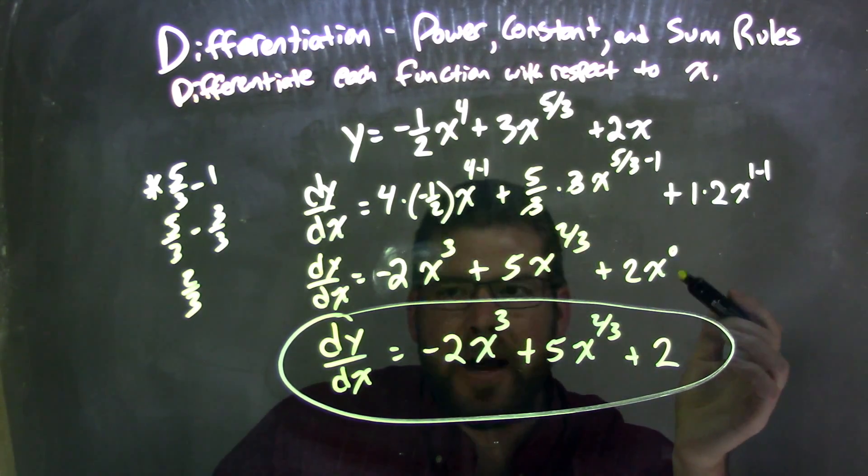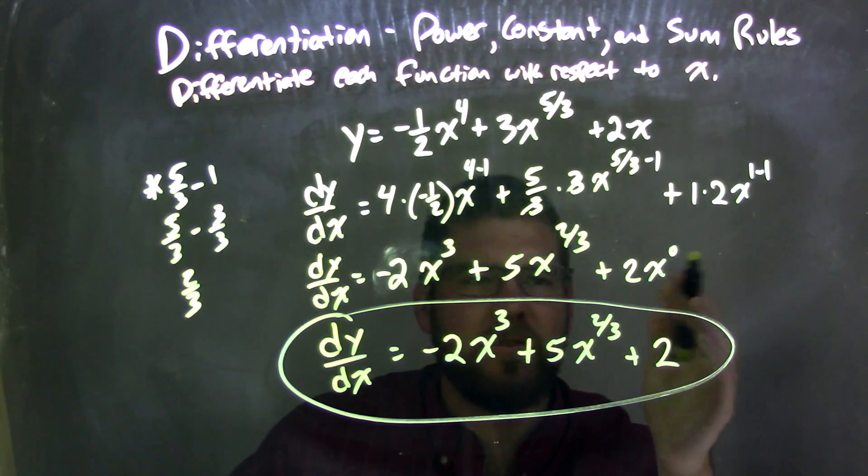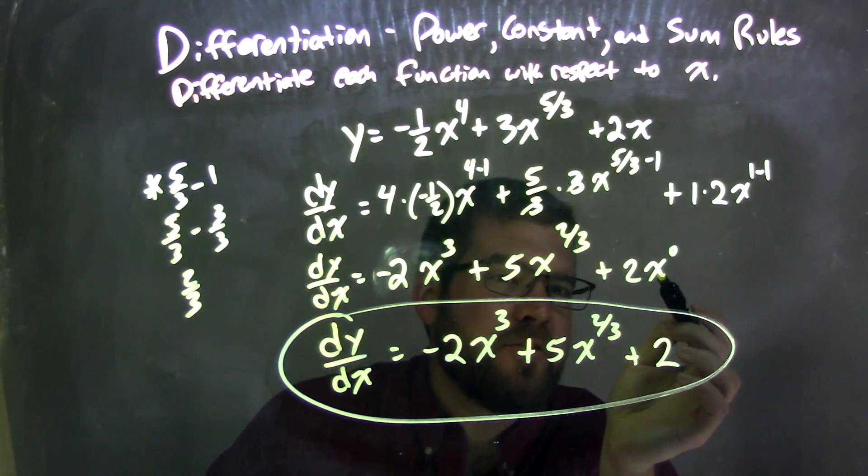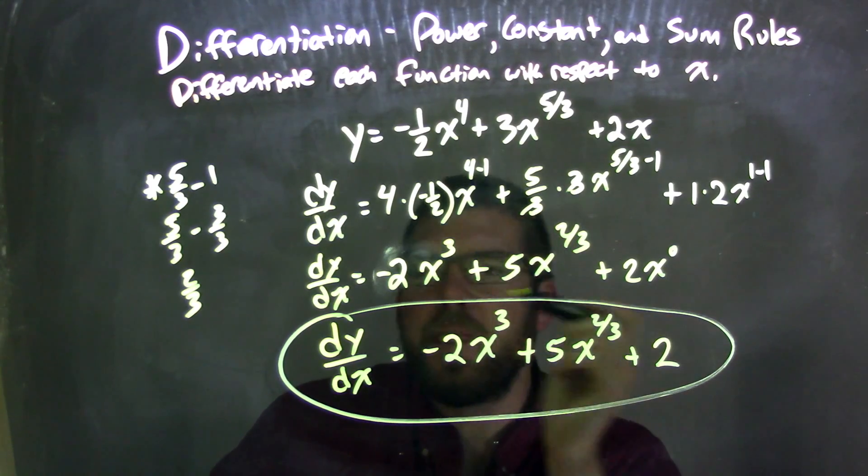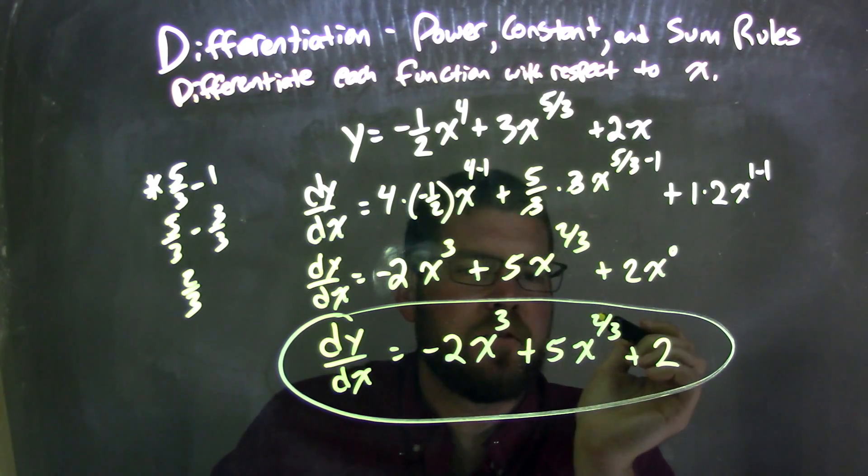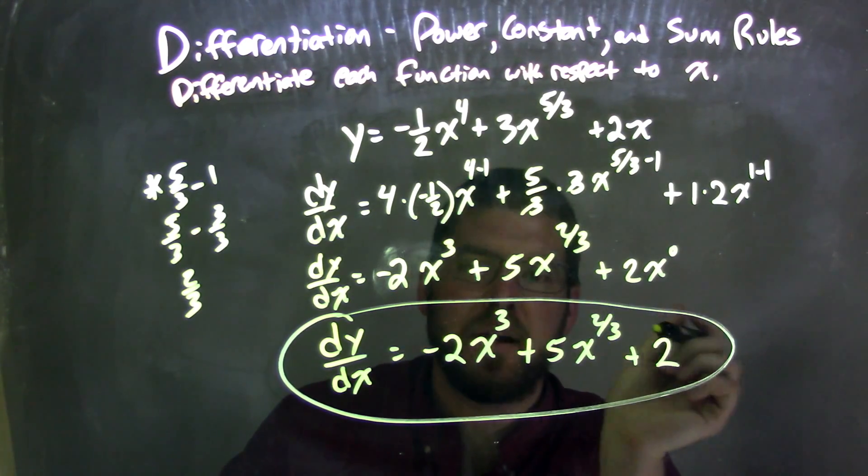Don't really need the x to the zero power, and the more comfortable you get with this, you'll be doing less steps. But we have x to the zero power is just one, so two times one is two. So our final answer here is dy dx is equal to negative two x to the third plus five x to the two-thirds plus a two.